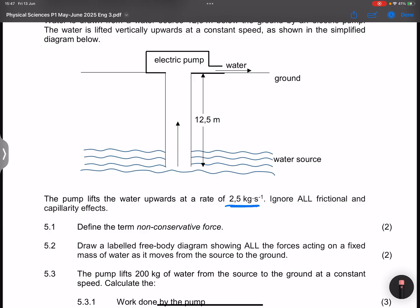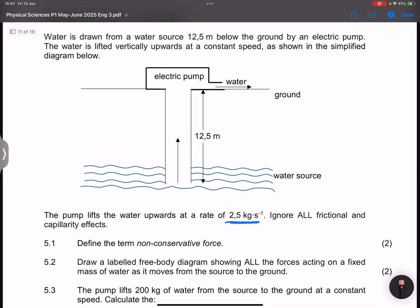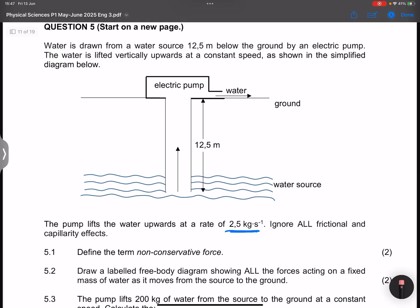Now they say draw a labeled free body diagram showing all the forces acting on a fixed mass of water as it moves up from the source to the ground. Note that the water would be moving at a constant speed. So what does that mean?